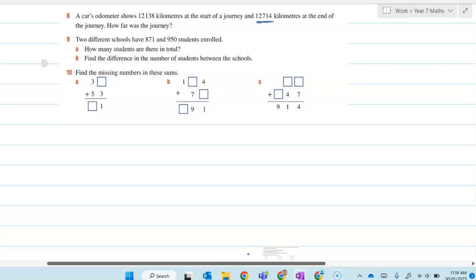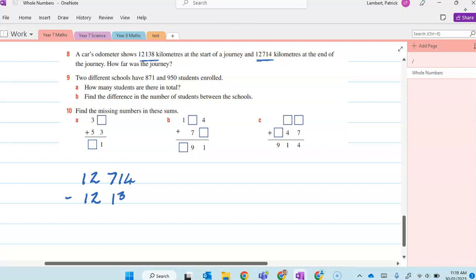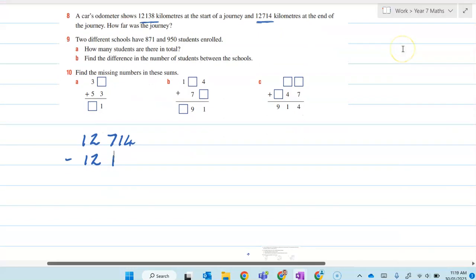We'll start by laying that one down and subtracting, and that'll tell us how many we have altogether. So we have 12,714 minus 12,138. Let's see if we can make that a bit better. Bear with me while we do this. So it's a subtraction sum.